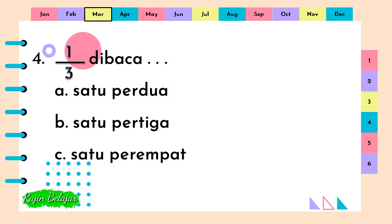Pecahan berikut ini dibaca titik-titik-titik. A. Satu per dua. B. Satu per tiga. C. Satu per empat. Jawaban yang benar adalah B. Satu per tiga.